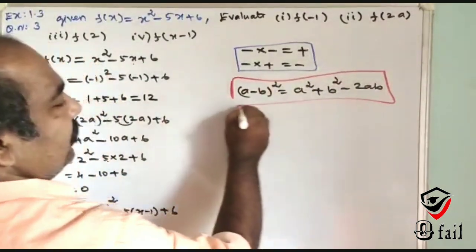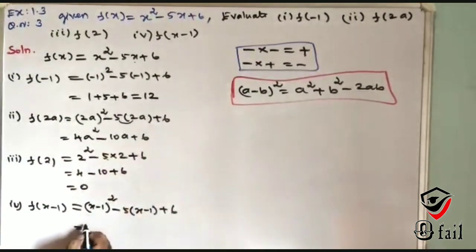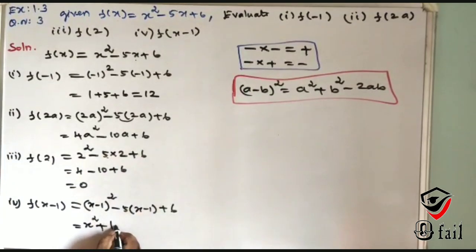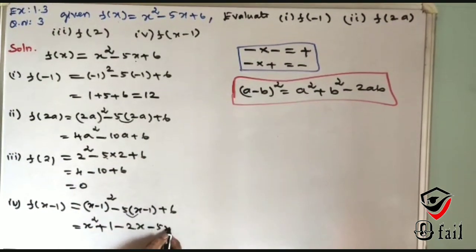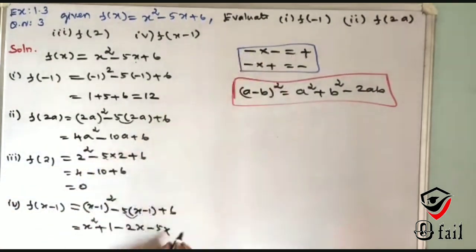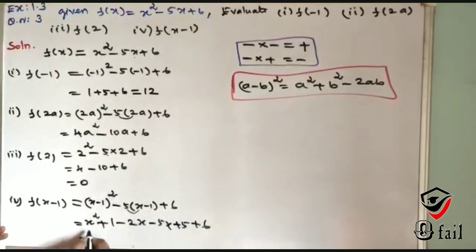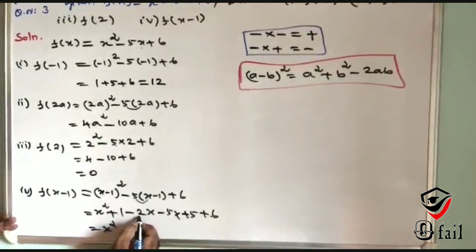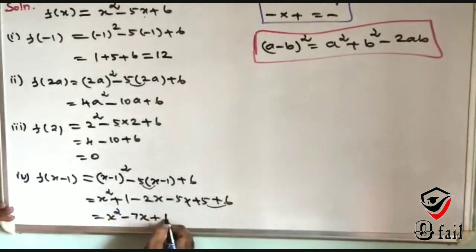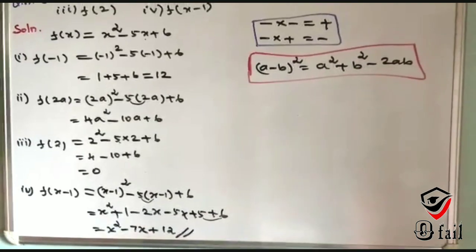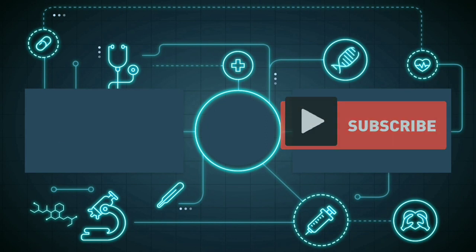Using a minus b whole squared: here a is X, so we get X squared plus 1 minus 2X, then minus 5X plus 5 plus 6. Simplifying: X squared minus 2X minus 5X plus 5 plus 6 equals X squared minus 7X plus 11.